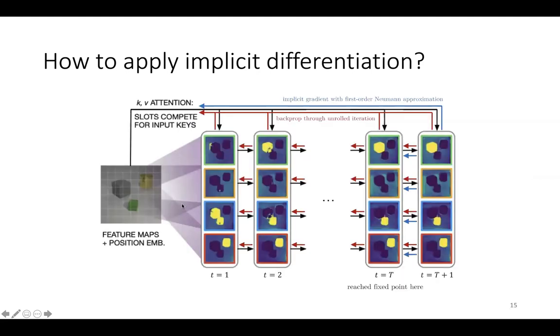Concretely, we implement implicit differentiation by iterating the slot attention cell to a fixed point and backprop gradients through only one additional step of the slot attention cell, by simply truncating the gradients.